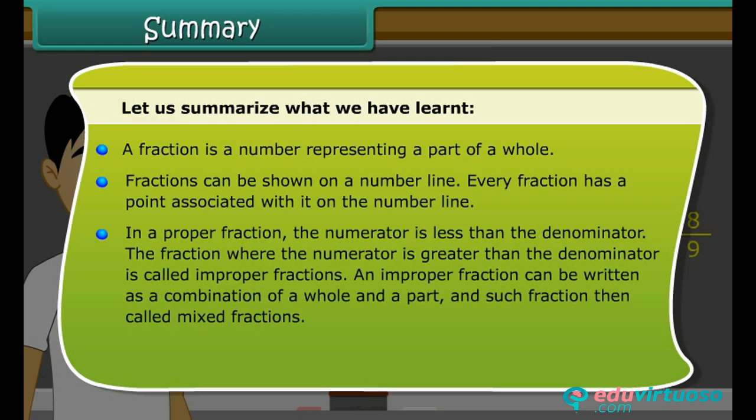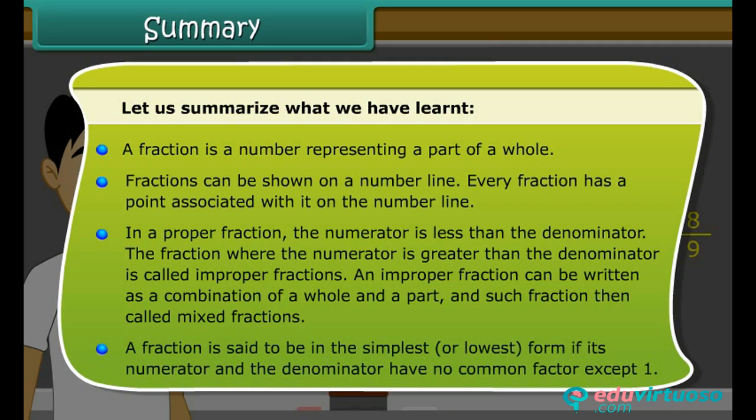In a proper fraction, the numerator is less than the denominator. The fraction where the numerator is greater than the denominator is called improper fractions. An improper fraction can be written as a combination of a whole and a part, and such fraction is then called mixed fractions. A fraction is said to be in the simplest or lowest form if its numerator and the denominator have no common factor except one.